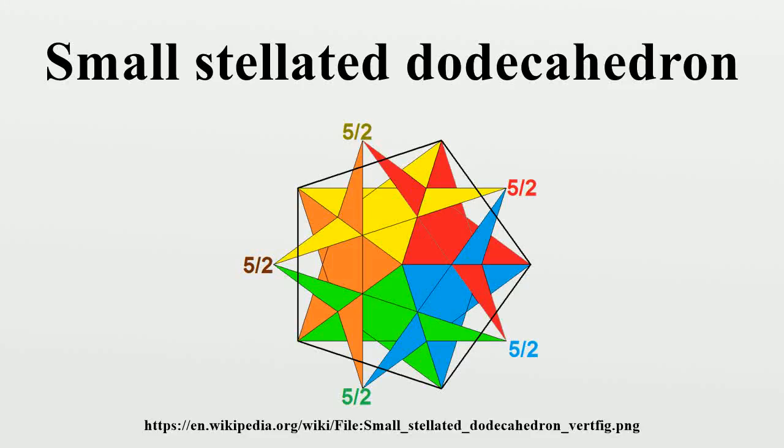In geometry, the small stellated dodecahedron is a Kepler-Poinsot polyhedron, named by Arthur Cayley, and with Schläfli symbol 5 halves, 5.